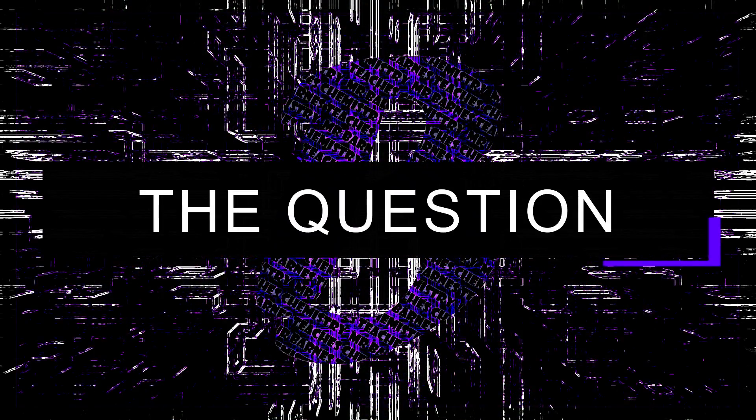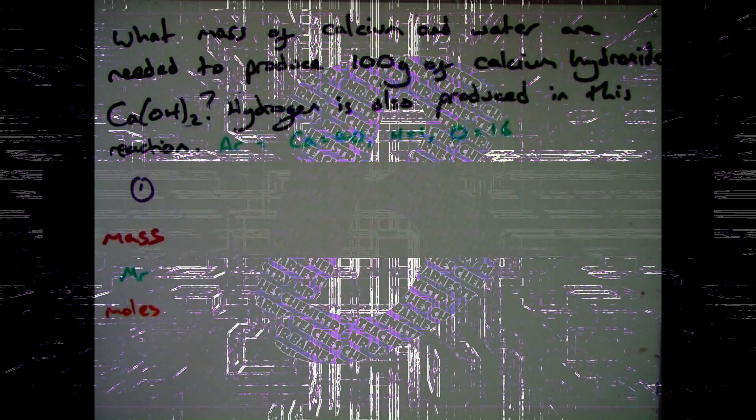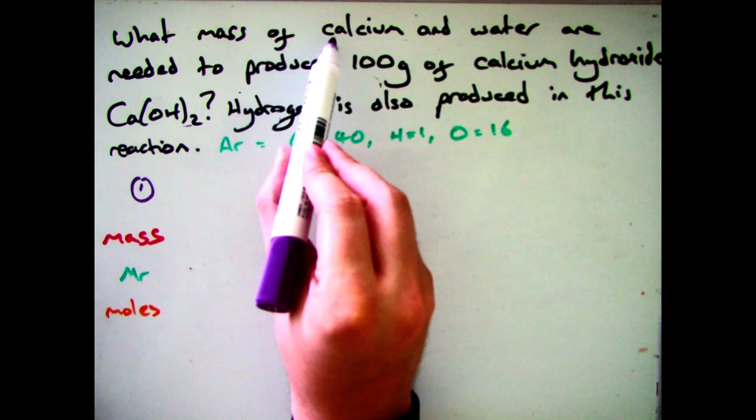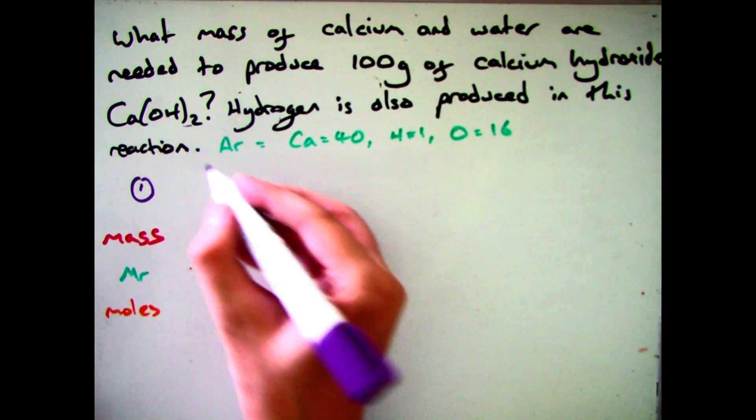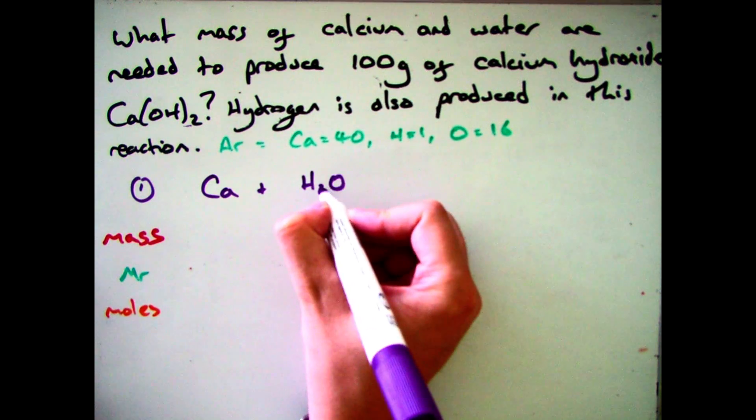Okay I'm going to go through one more example with you before we move on to the apply section. And in this question I'm going to have a look at a slightly simplified way you can work out the answer. So the question asks what mass of calcium and water are needed to produce 100 grams of calcium hydroxide. Hydrogen is also produced in this reaction.